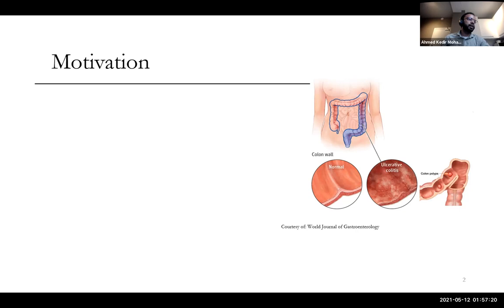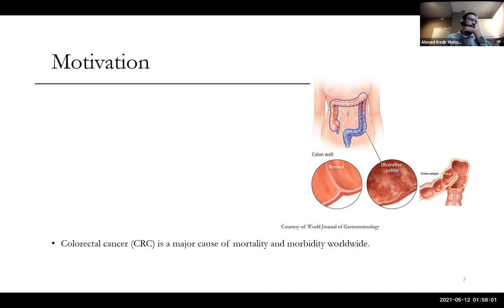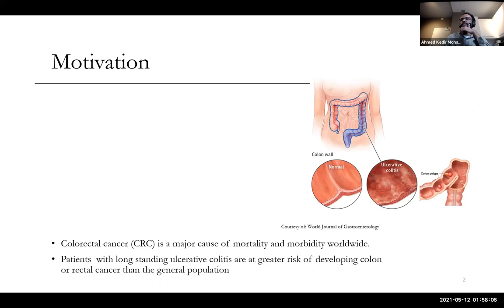The motivation for our work is the human colon and colorectal cancer detection. If you have a normal colon, the wall will be very smooth. When you have some disease like ulcerative colitis or Crohn's disease, the wall is eroded and you have bleeding. Colorectal cancer is a major source of cancer deaths. If you have ulcerative colitis or Crohn's disease, you also have a higher risk of developing colon or rectal tumors. So it's very important to detect early.